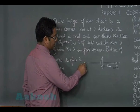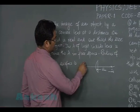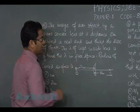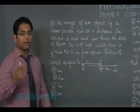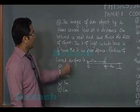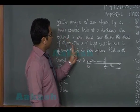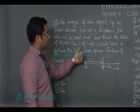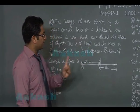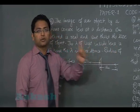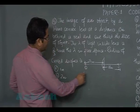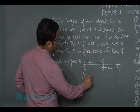Quite obviously this indicates the object distance has to be 24 meters, by using V by U equals to I by O. The wavelength of light inside the lens is 2 by 3 times the wavelength in free space. That means this data is going to help us calculate mu, and straightaway it indicates mu equals to 3 by 2.